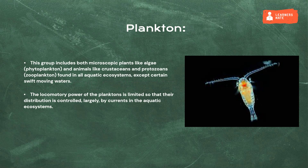Plankton: this group includes both microscopic plants like algae (phytoplankton) and animals like crustaceans and protozoans (zooplankton), found in all aquatic ecosystems except certain swift-moving waters. The locomotory power of planktons is limited so that their distribution is controlled largely by currents in the aquatic ecosystems.